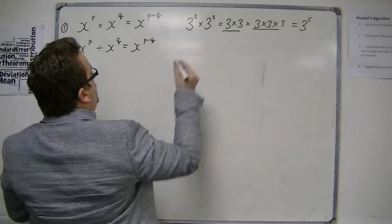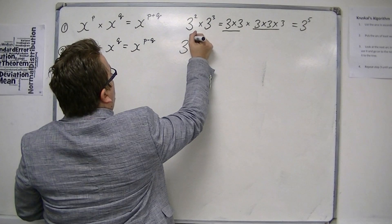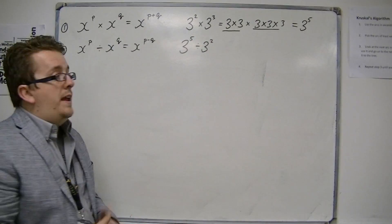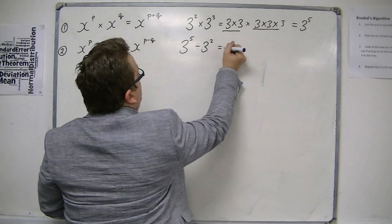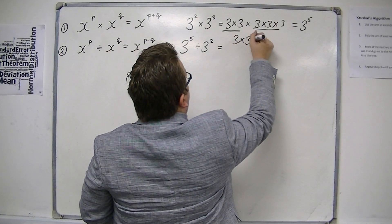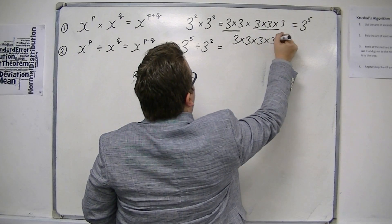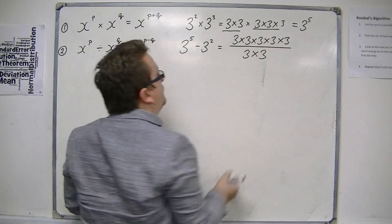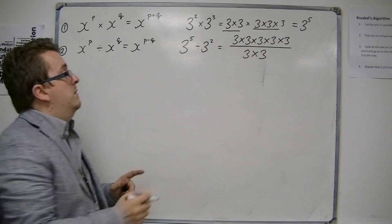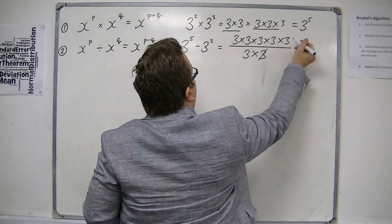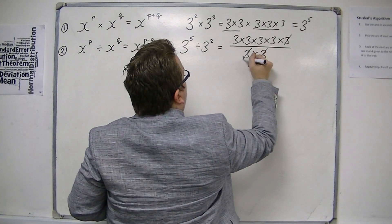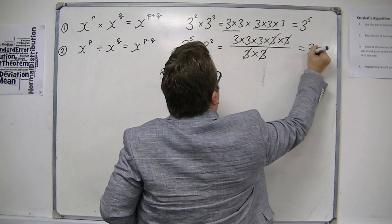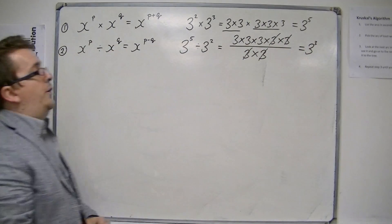So if you've got something like 3 to the 5 divided by 3 squared, then you could represent this as 3 times 3 times 3 times 3 times 3, and then cancel the 3's. A 3 from the bottom cancels with one from the top, and again, and you're left with 3 times 3 times 3 — so 3 cubed. That's 5 take away 2.